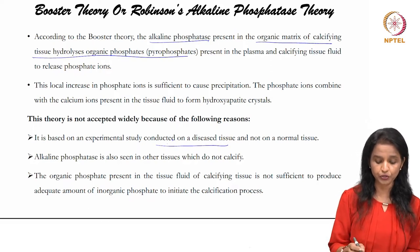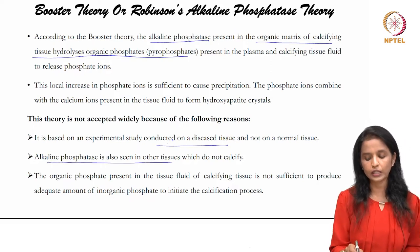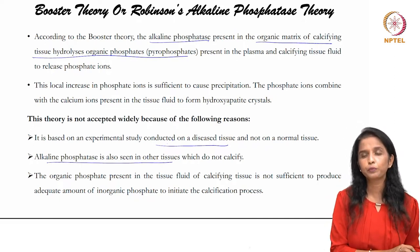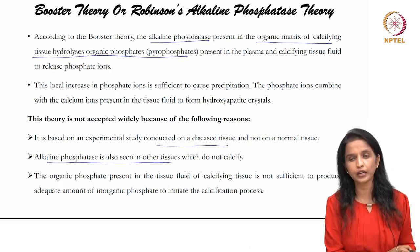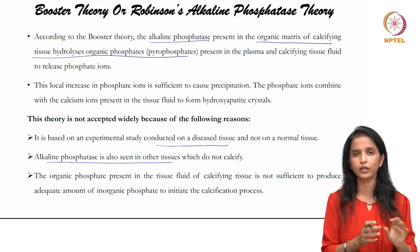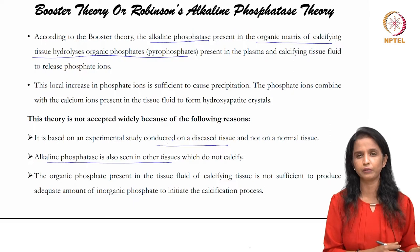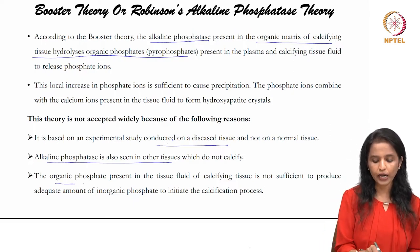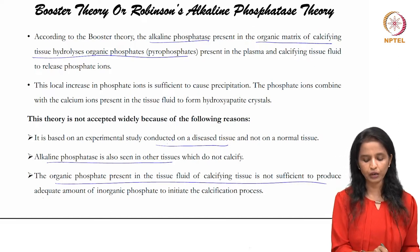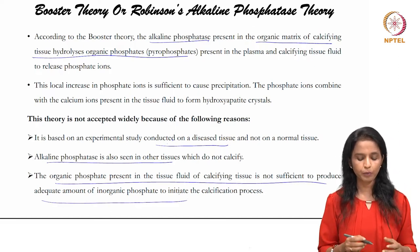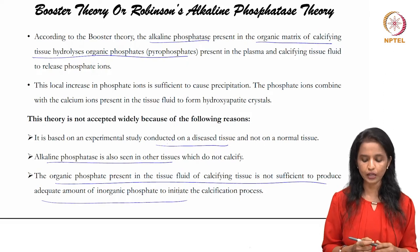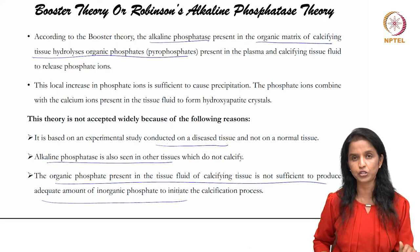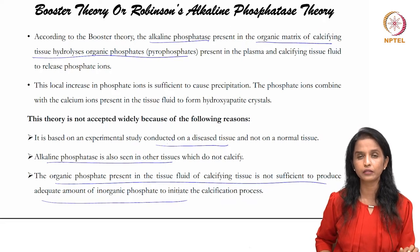Robinson's theory was not widely accepted because it was based on a study conducted on diseased tissue. Also, alkaline phosphatase is present in various other tissues — yet those areas do not get mineralized — and organic phosphate present in tissue fluid is not sufficient to produce adequate inorganic phosphate to initiate the mineralization process.